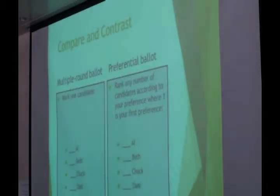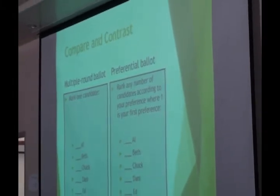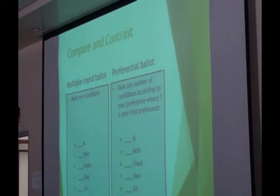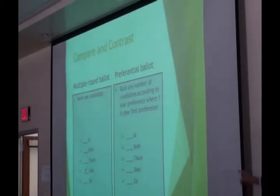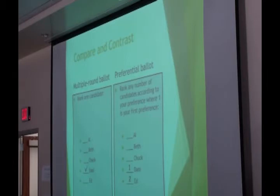Here are the similarities and differences between the two ballots. On a regular ballot, you mark one and only one candidate — the preference here is for Danny. On a preferential ballot, not only can you vote for Danny as your number one choice, but you also get to choose a secondary choice, Ed in this case, a tertiary choice, Beth, a fourth choice, and a fifth choice.